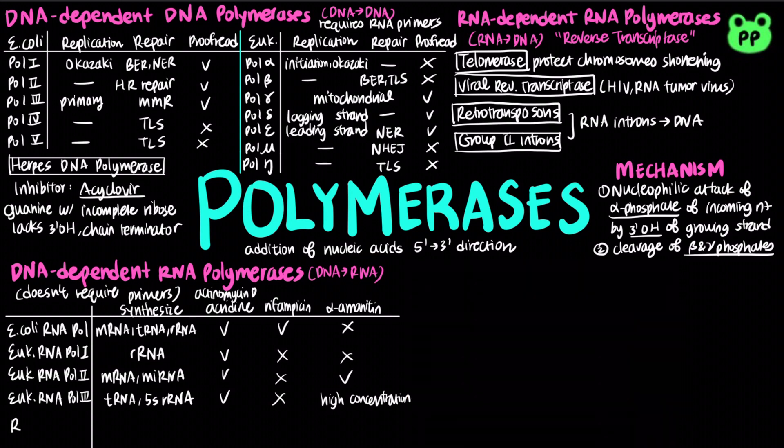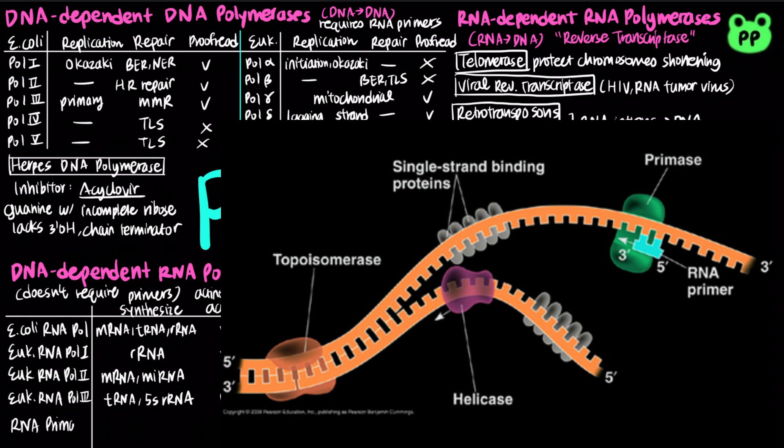Another type of DNA-dependent RNA polymerase is RNA primase, which is involved in DNA replication to synthesize RNA primers for DNA polymerases.